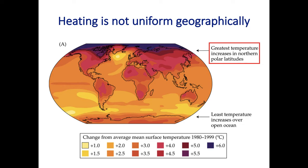Warming is occurring the most at the poles, and by far the Arctic is taking the brunt of that. Because of our climate systems, different air currents and water currents, heating is not uniform. This shows the change in average mean surface temperature from 1980 to 1999, and we see the greatest increase up in the Arctic — looking at around six or seven degrees.